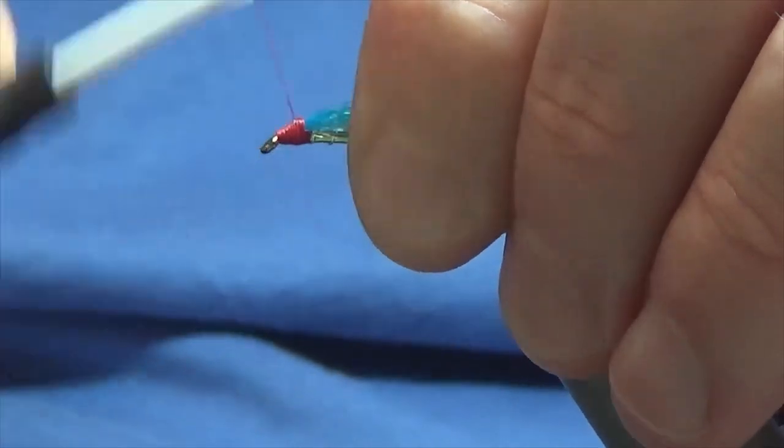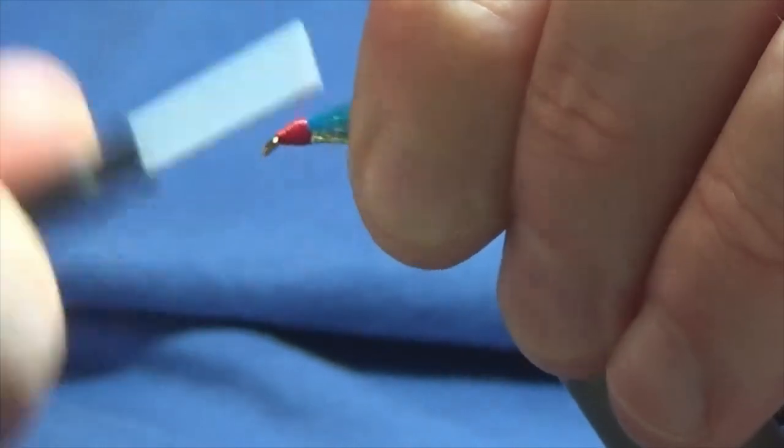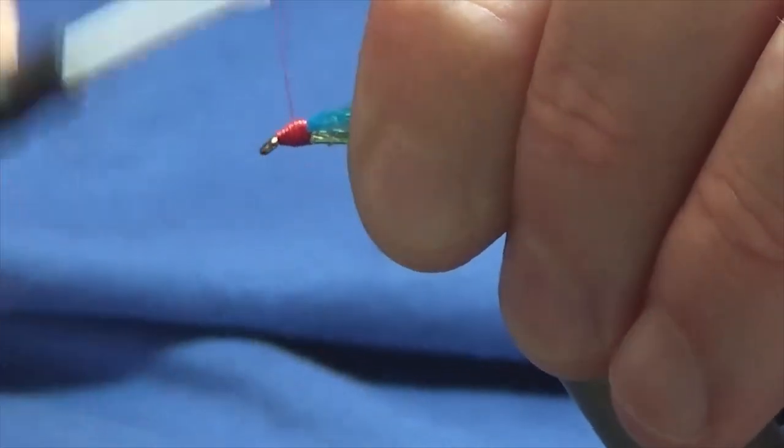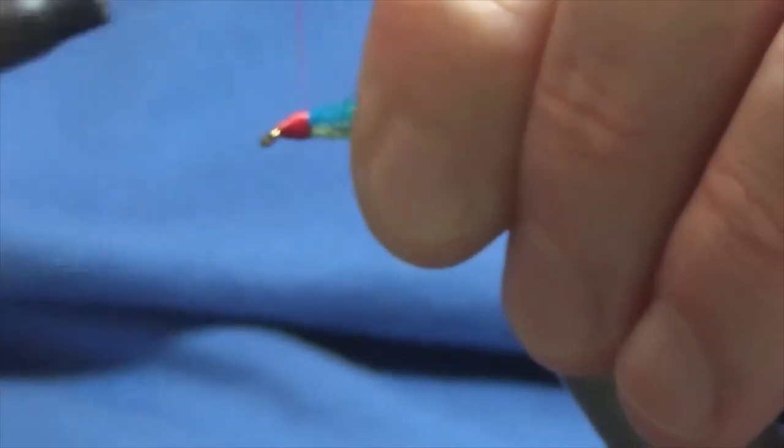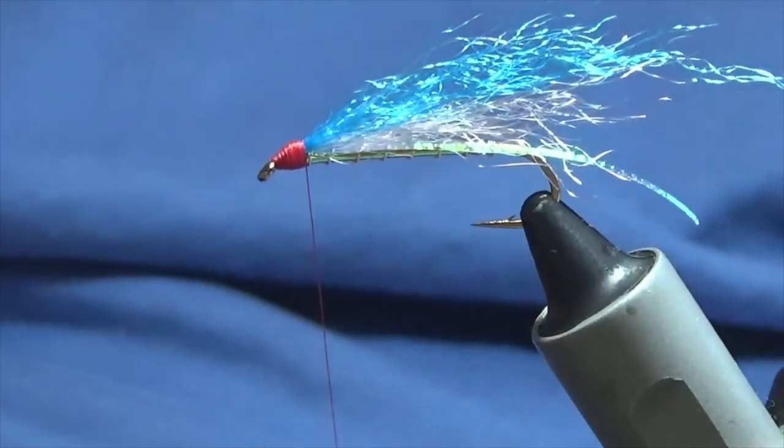I'm just using the red Uni-Thread here. What you could use is you could come back in and use the Glo-Brite floss number three if you wish.